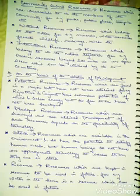The very first is potential resources. Potential resources are those resources which are found in a particular region but have not yet been utilized. For example, the Rajasthan and Gujarat area is endowed with enormous potential for wind and solar energy. But still, these have not been developed fully. That means Gujarat and Rajasthan have a potential for the development of wind and solar energy, but so far these have not been properly developed.